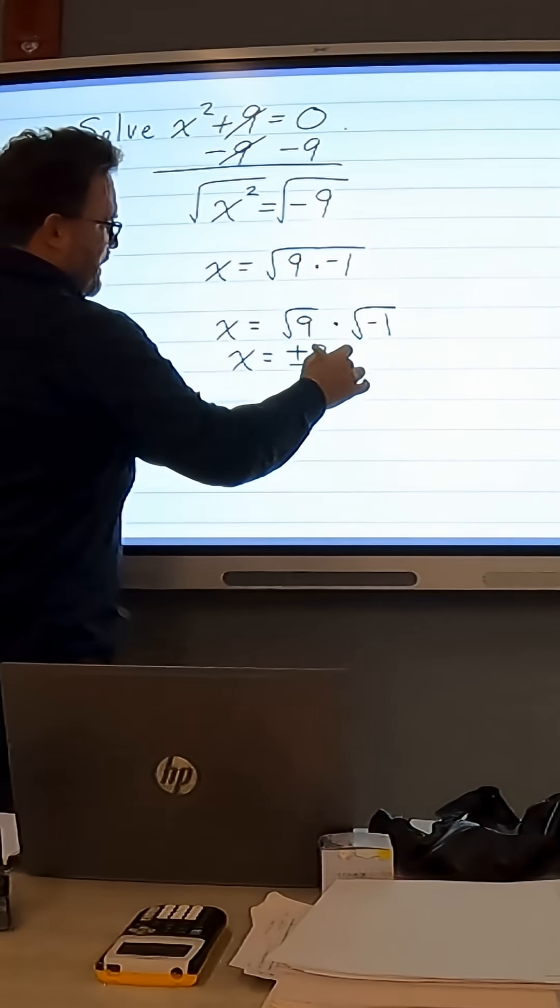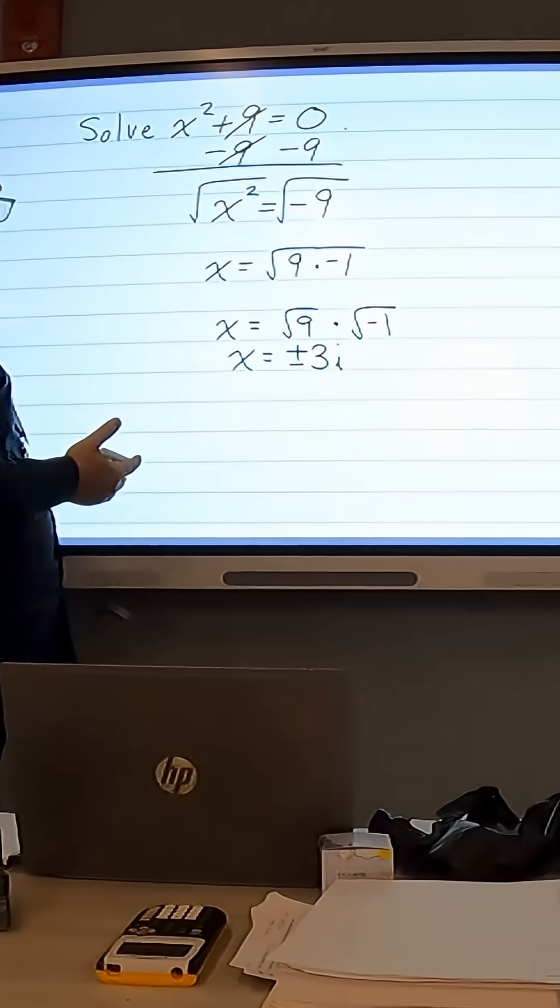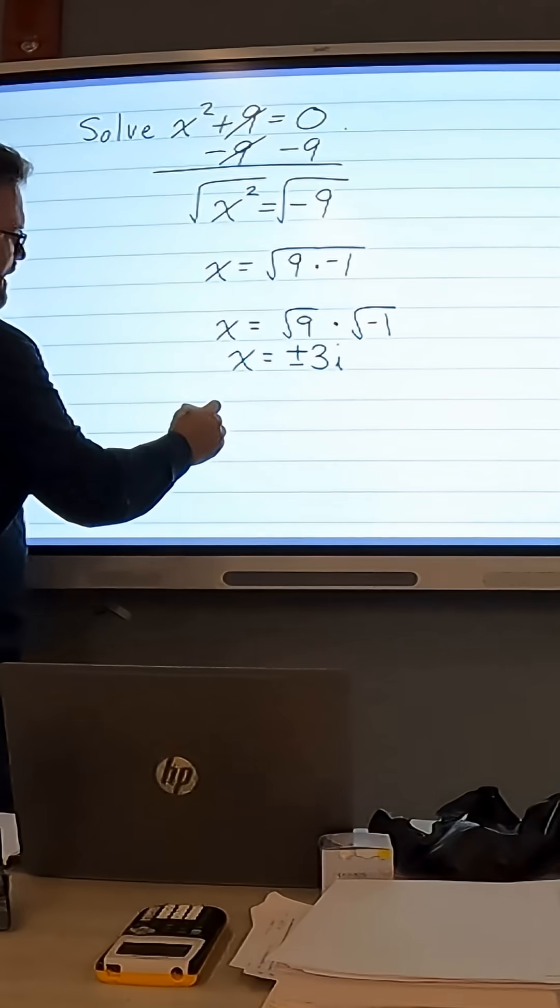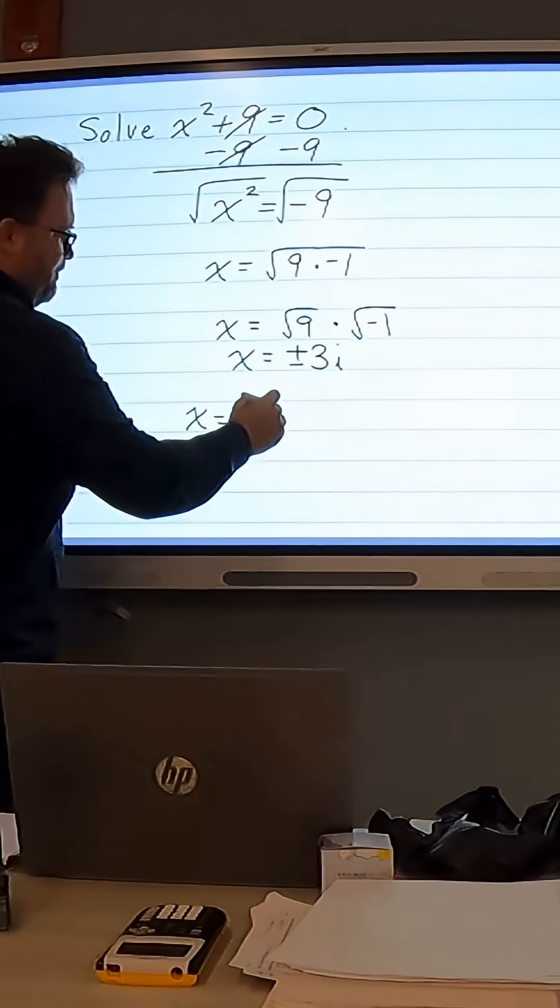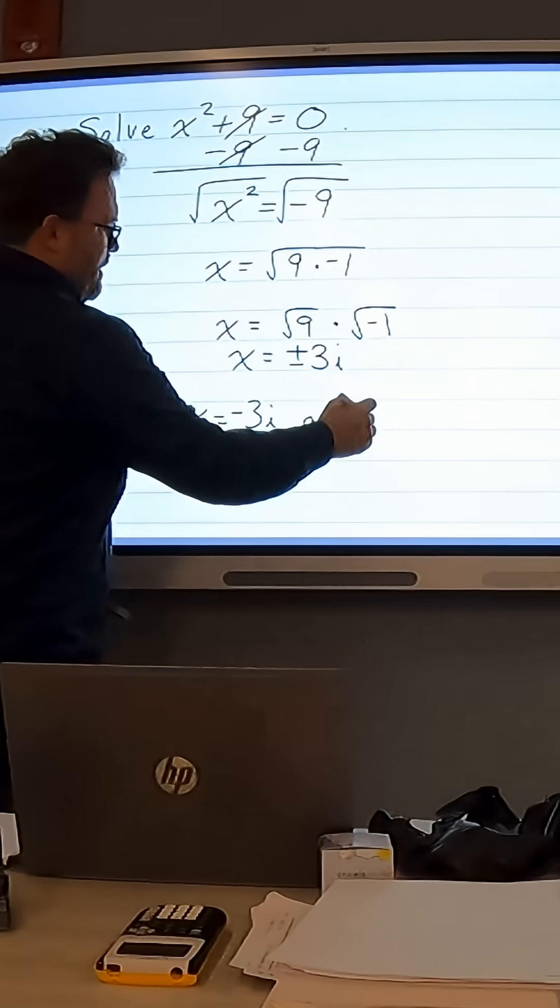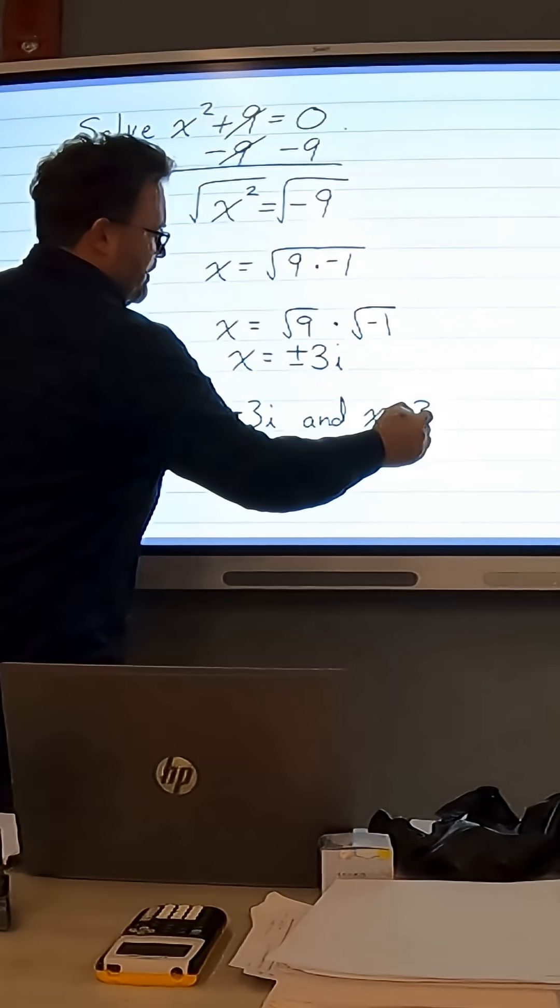So square root of negative 1 is going to be i. So we have x equals plus or minus 3i. So our two solutions are x equals negative 3i and x equals positive 3i.